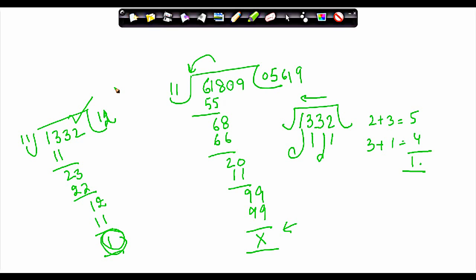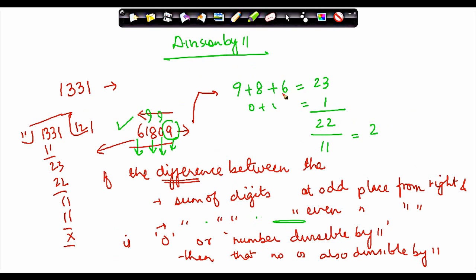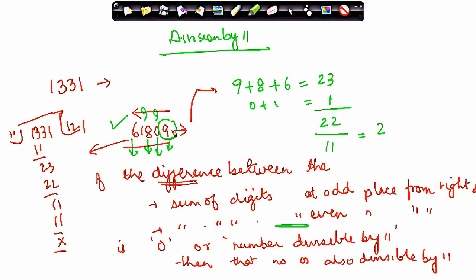This is a bit more complicated compared to the other divisibility rules, but one really needs to bear in mind there are 3 simple steps. First, move from right to left and total the digits at odd places. Second, total the digits at even places. Third, take the difference — if that difference equals 0 or is divisible by 11, then the number itself is also divisible by 11.